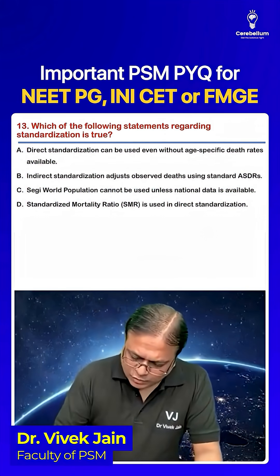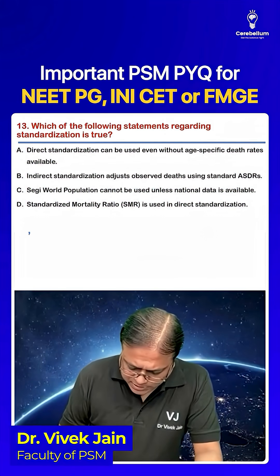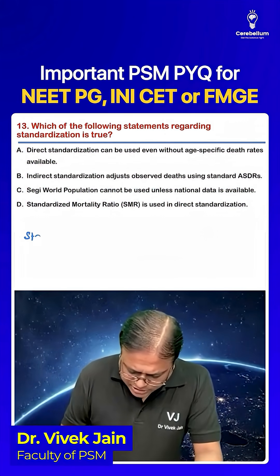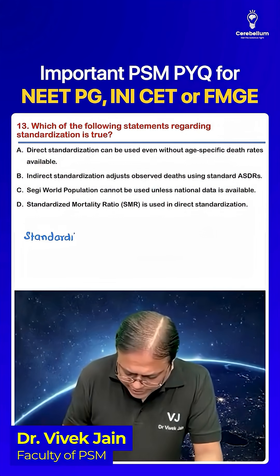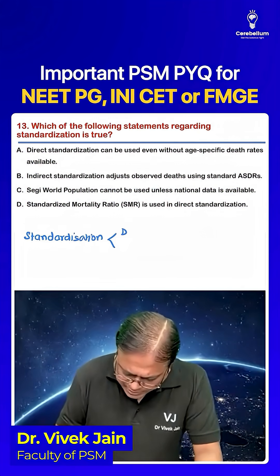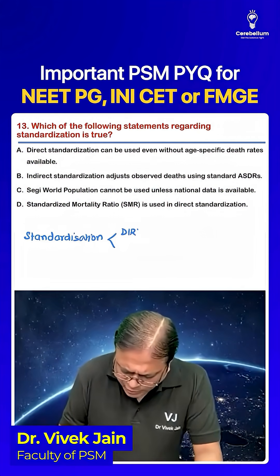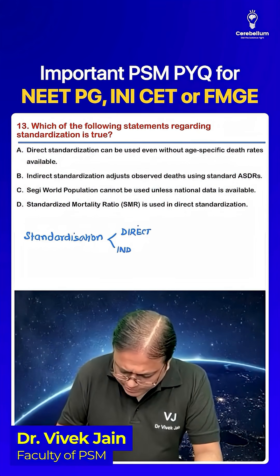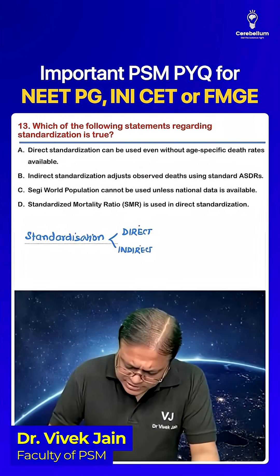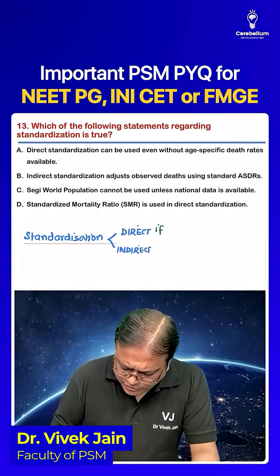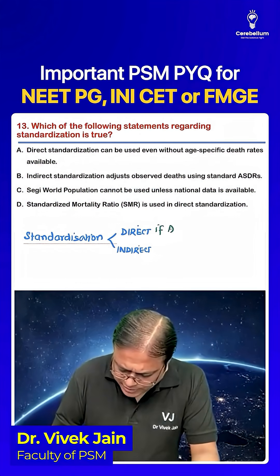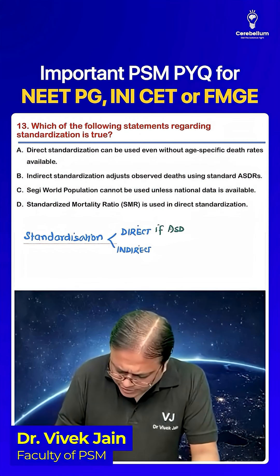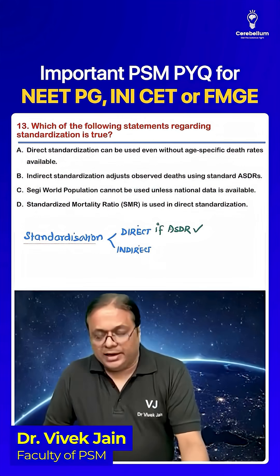What you have to know from this older concept is standardization can be done in two ways: direct and indirect. Direct standardization is used when age-specific death rates are available.